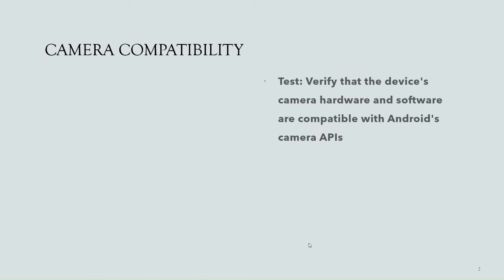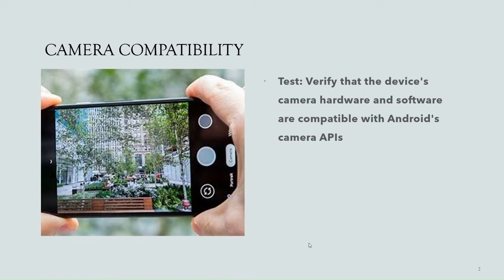So let's get started. The first type of this test category is camera compatibility. Tests are included to verify that the device's camera hardware and software are compatible with Android's camera APIs — Camera 1 API and Camera 2 API — to check if the camera hardware and software are compatible with all these camera APIs.